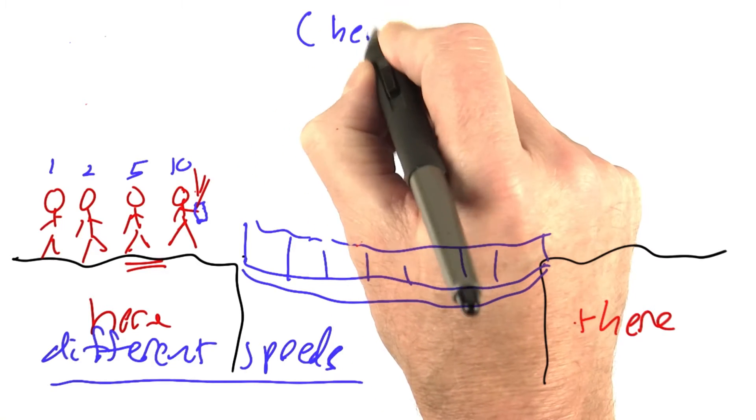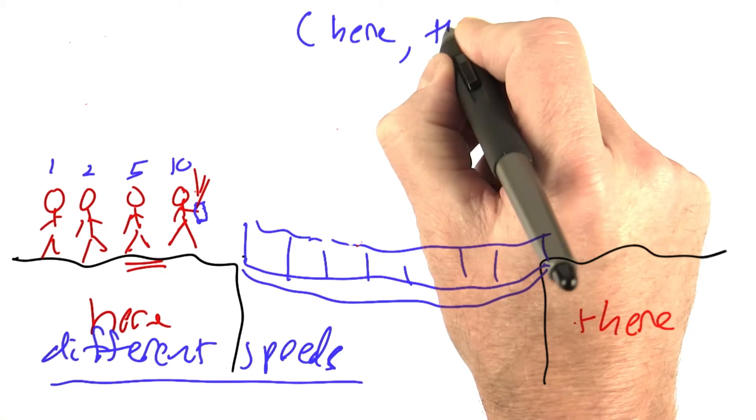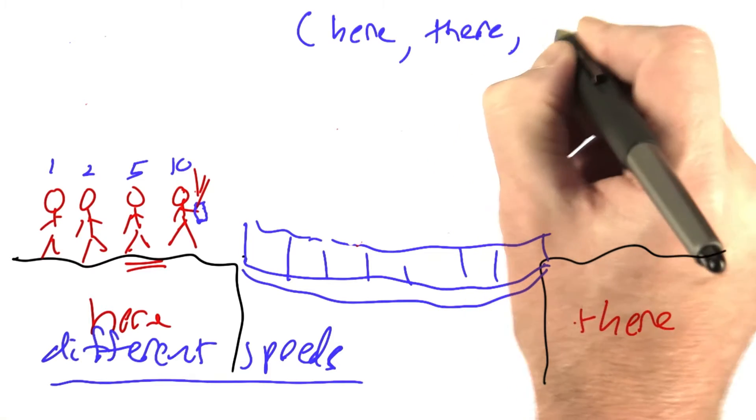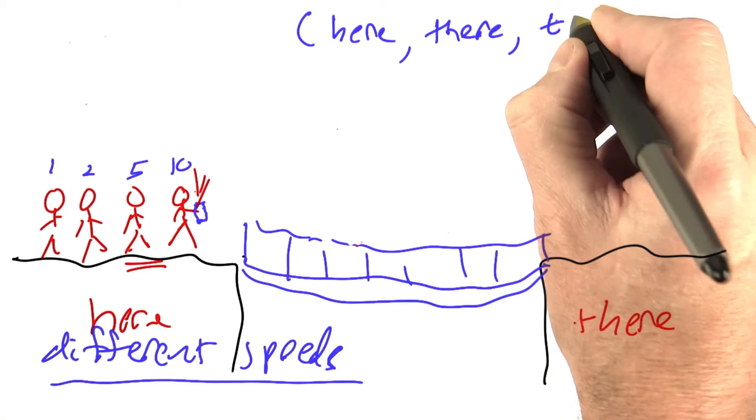Now out of those many choices, I made a choice to say I'm going to represent a state as a tuple of here, there, and t.